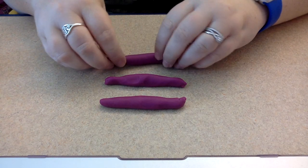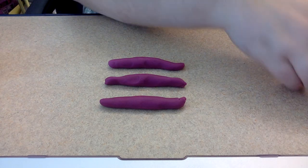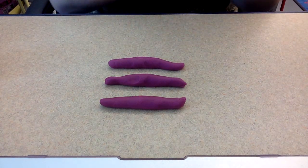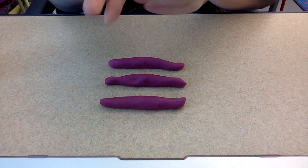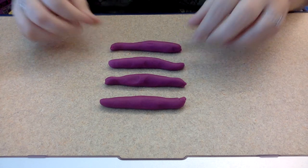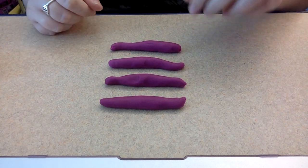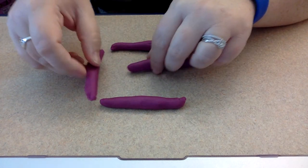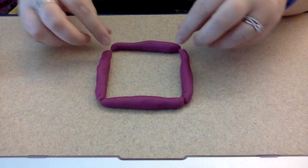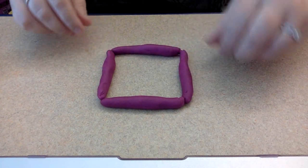So I'm going to make four sides and make sure they're all the same length. So now that I have four sides that are all the same, I'm going to make my square. I can put them like this. So I made a square.